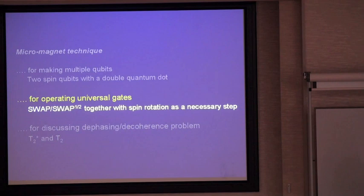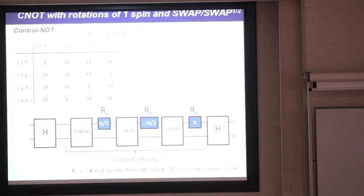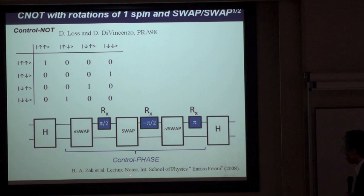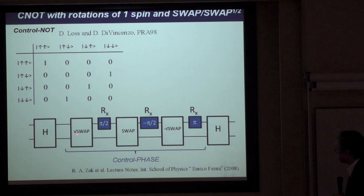Now I move on to implementing the SWAP and square-root-SWAP gates. This is the quantum circuit scheme we plan to use to make a controlled-NOT gate, as proposed by Zack and co-workers. This circuit consists of a SWAP and a square-root-SWAP, and a half-pi rotation of one of the two spins.